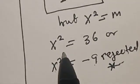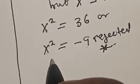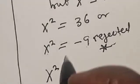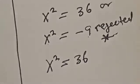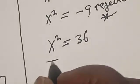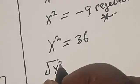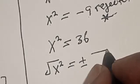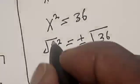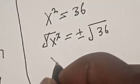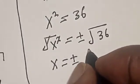The only valid solution is x squared equals 36. Taking the square root of both sides, x is equal to plus or minus 6.